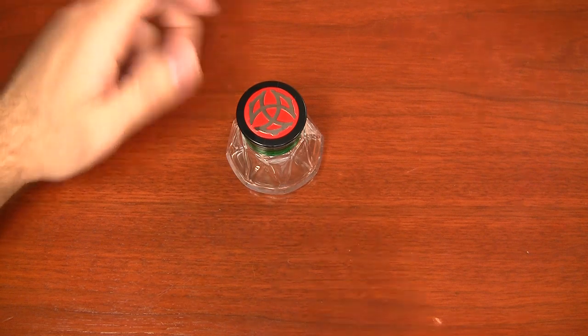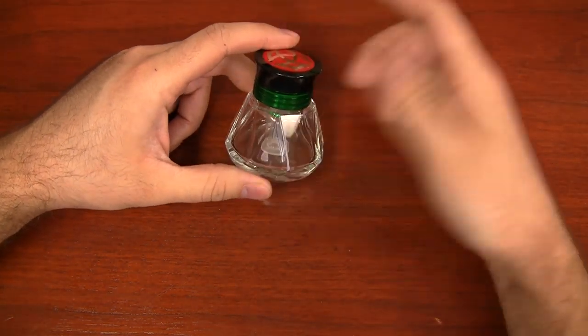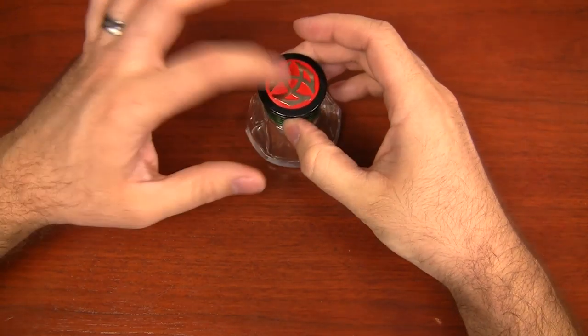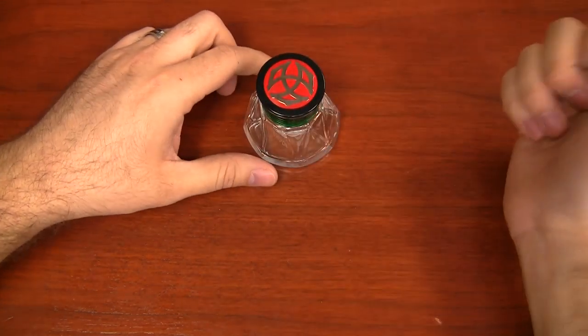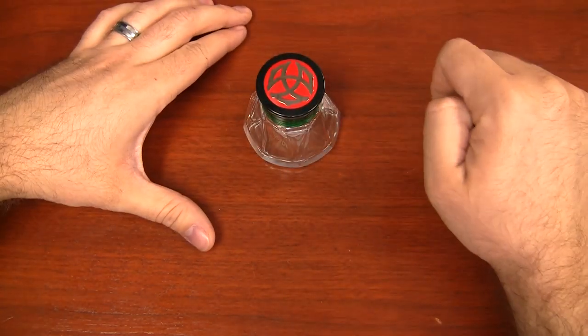It's very similar to the TWSBI Diamond 50 inkwell, except that the cap on the Diamond 50 is aluminum and the cap on the Diamond 50P is plastic. I'm going to compare and contrast the two and show you the differences. The TWSBI Diamond 50P is exactly the same as the TWSBI Diamond 50, but instead of having an aluminum cap like the Diamond 50 does, this one has a plastic cap, hence the P.